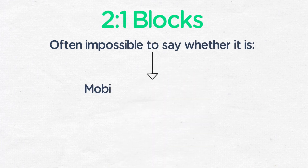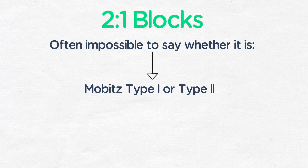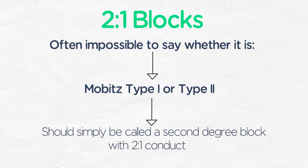Technically, if you see a two-to-one block, it is impossible to say whether it is Mobitz type 1 or type 2. This is because you can only see one PR interval, so you can't tell if the PR interval is lengthening or not. This is a common scenario and should simply be called a second-degree block with two-to-one conduction. You can't be more specific as to whether this second-degree block is Mobitz type 1 or type 2.